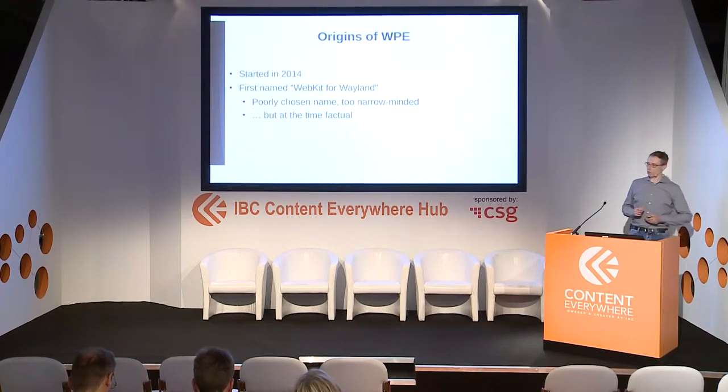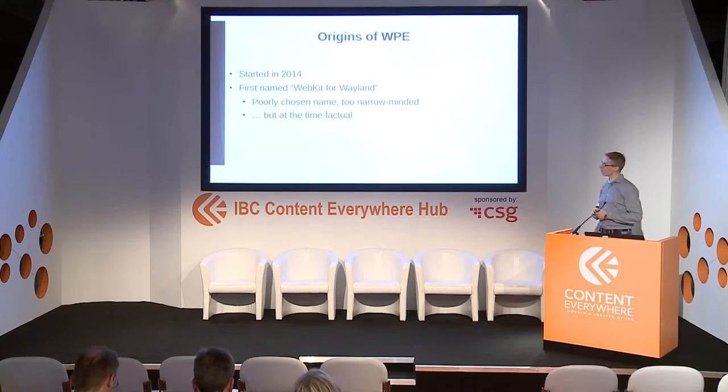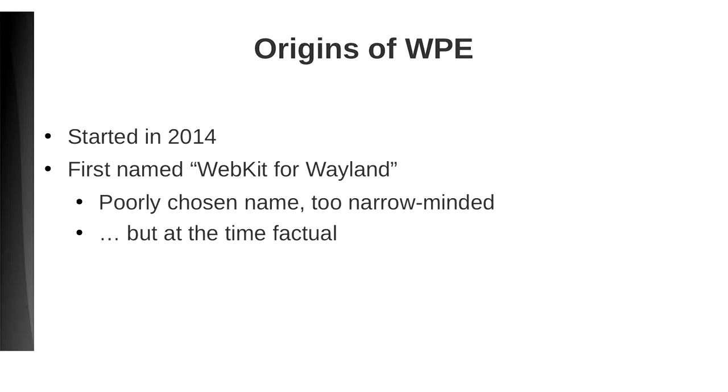The project itself started four years ago in 2014. It was first named WebKit for Wayland — Wayland being a window management system that was pretty new at the time. The name was poorly chosen. It was too narrow-minded because it targeted only that window management system, while we later realized we could work against a much broader set of tools and systems. Soon after, we simplified it and rebranded it as WPE.